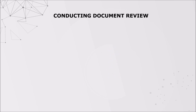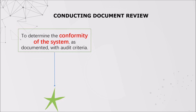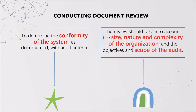The second step of planning our audit activities is to conduct document review. The objective of this step is to determine the conformity of the system as documented with audit criteria. The review should take into account the size, nature, and complexity of the organization, and the objectives and scope of the audit.